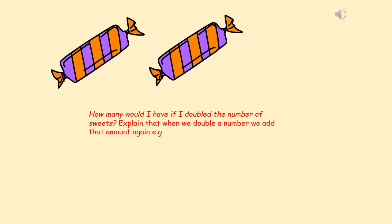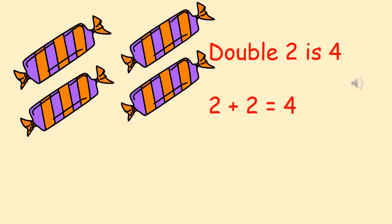Today we're looking at doubling. When we double a number, we add the same amount again. So how many sweets have I got on the screen? I've got two. And if I doubled it, I'd need to add another two. So can you work out how many I have if I double two? Double two is four. Two plus two equals four.